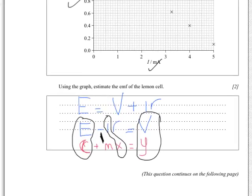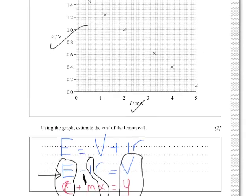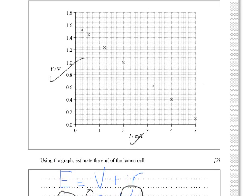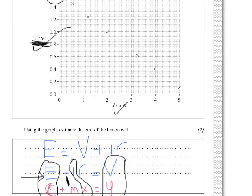So if we're going to use the graph to estimate the EMF of the lemon cell, what we're looking for is the intercept. So we have a look up here. Our intercept is 1.6 volts. Always check the axes when you're reading intercepts and gradients. So we end up with 1.6 volts.